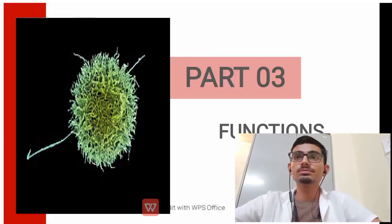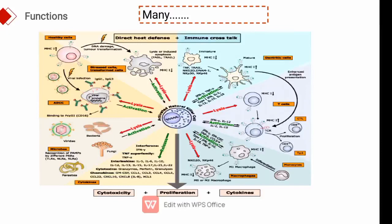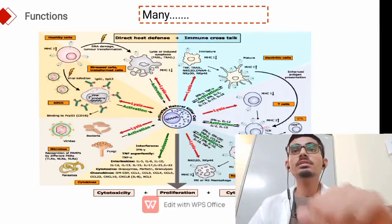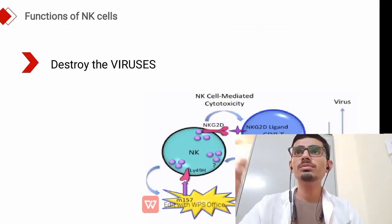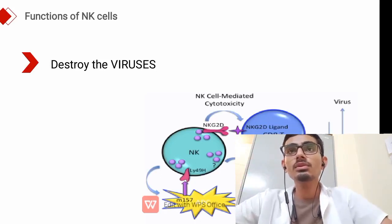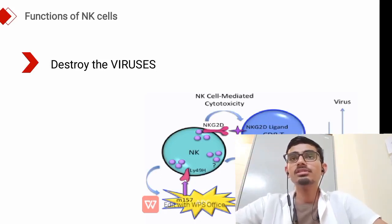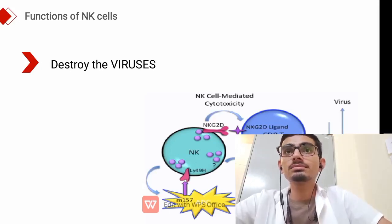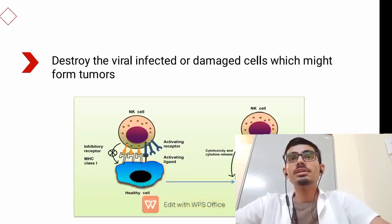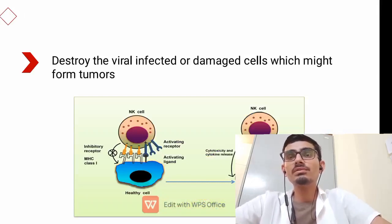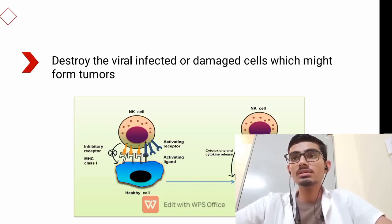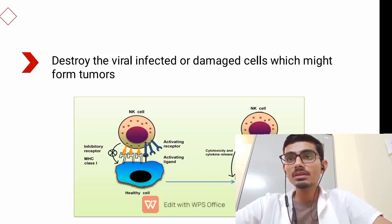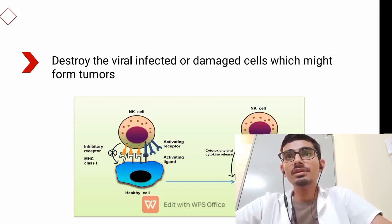There are many functions of NK cells. First, they destroy the virus — NK cells are very important for destroying viruses. Second, they destroy virus-infected or damaged cells which might form a tumor in our body, because viruses can cause increased cell production that forms a tumor.